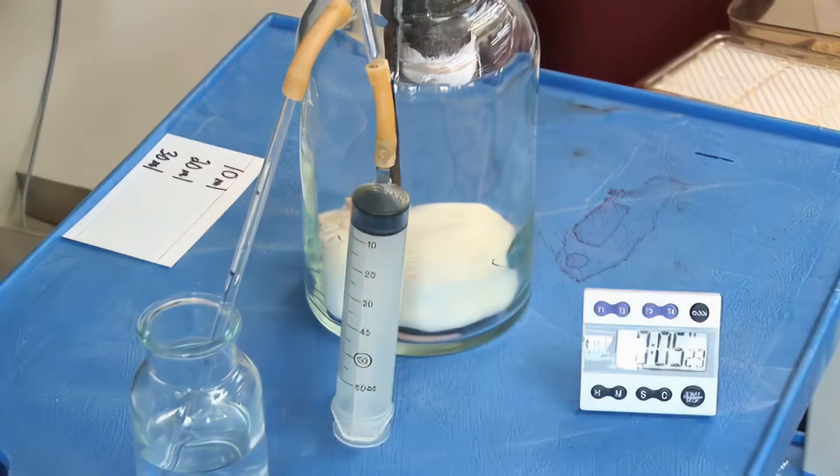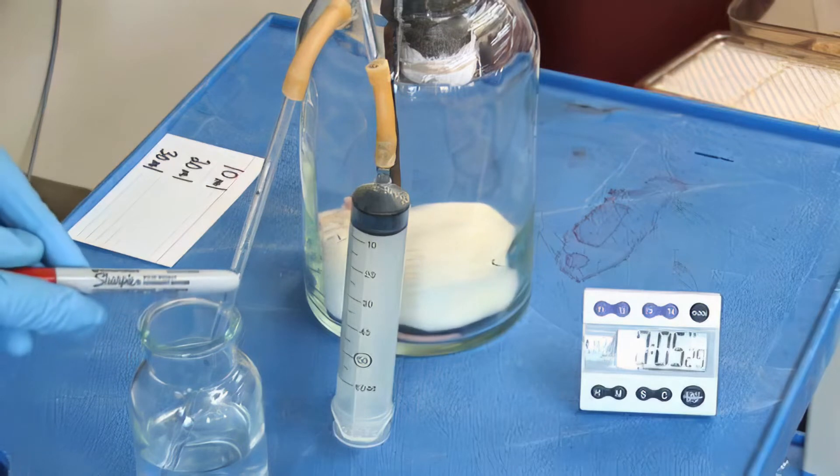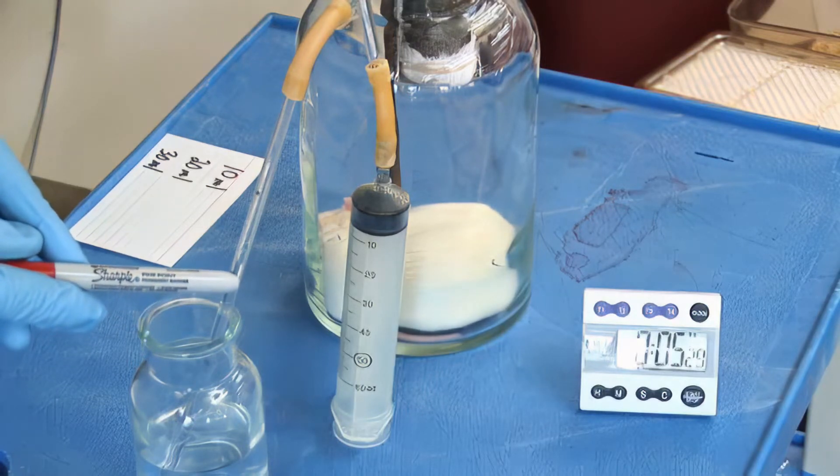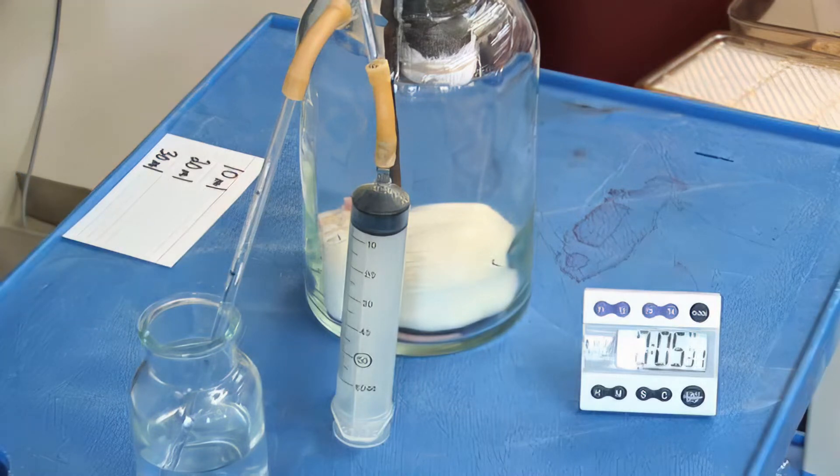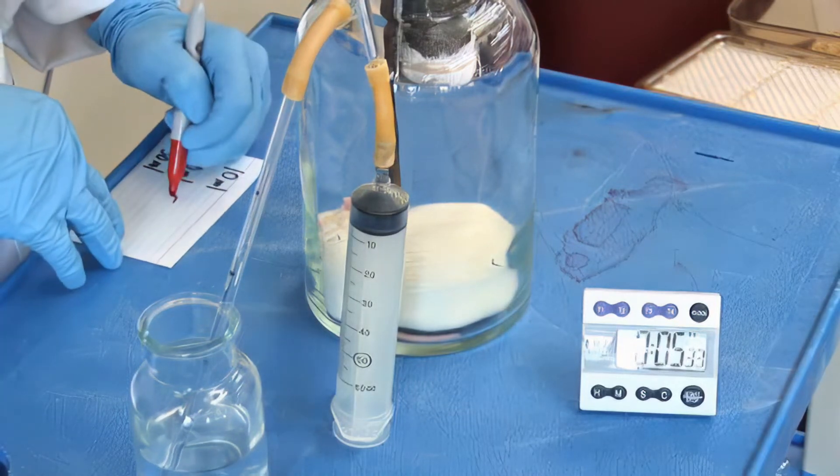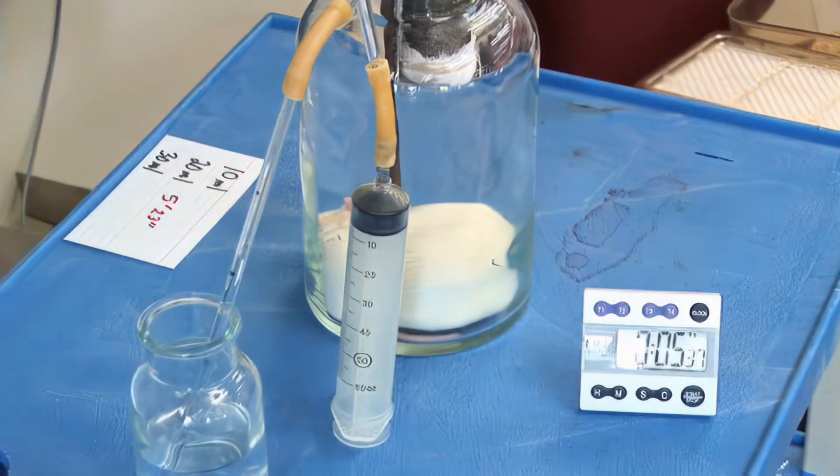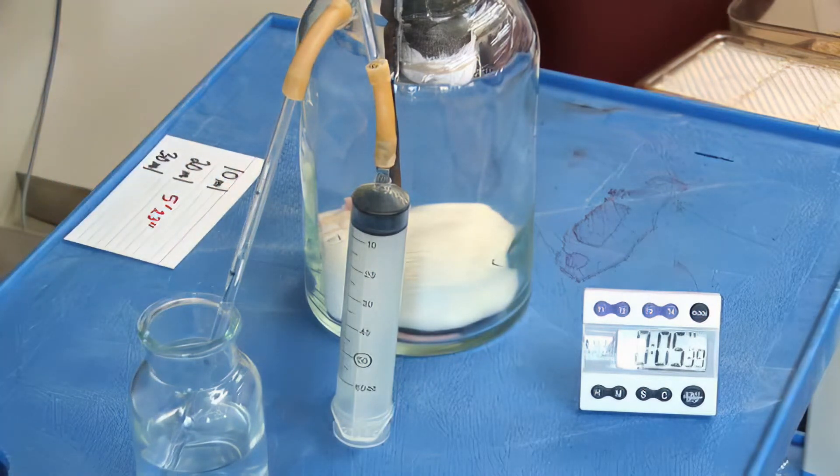At 5 minutes, 23 seconds, we are at the 20 mil consumption calibration mark. So after 5 minutes, 23 seconds, 20 mils of oxygen were consumed by this rat.